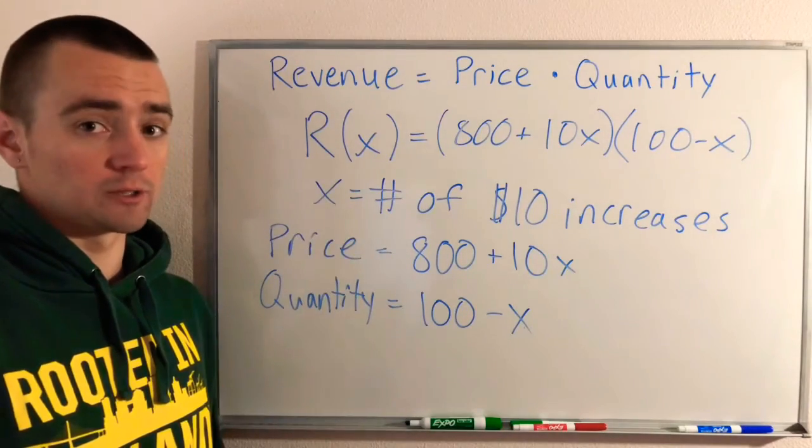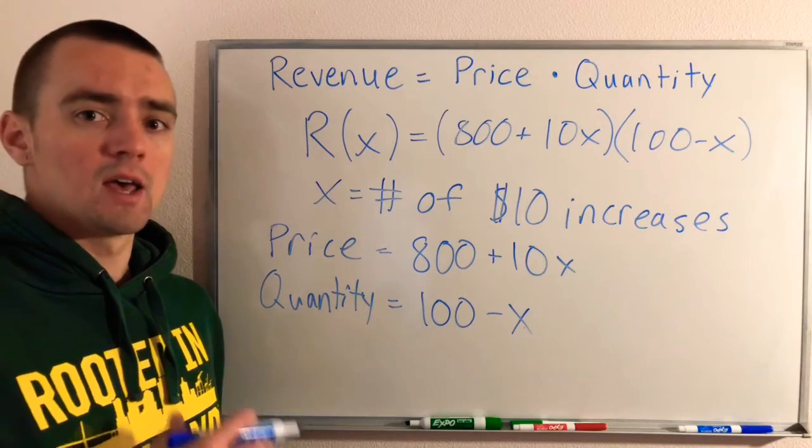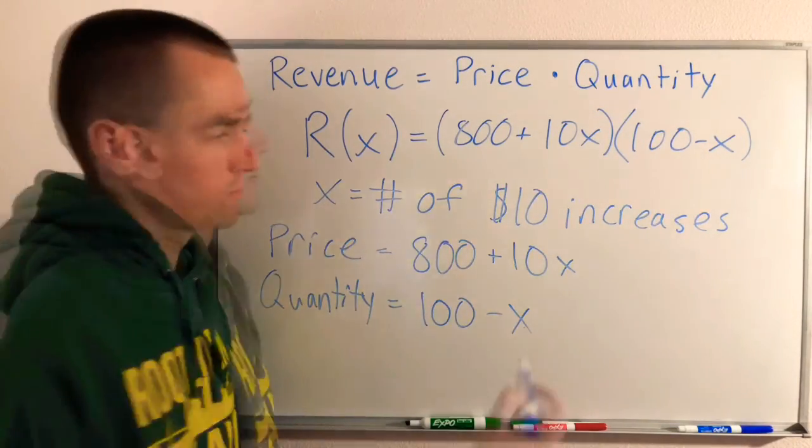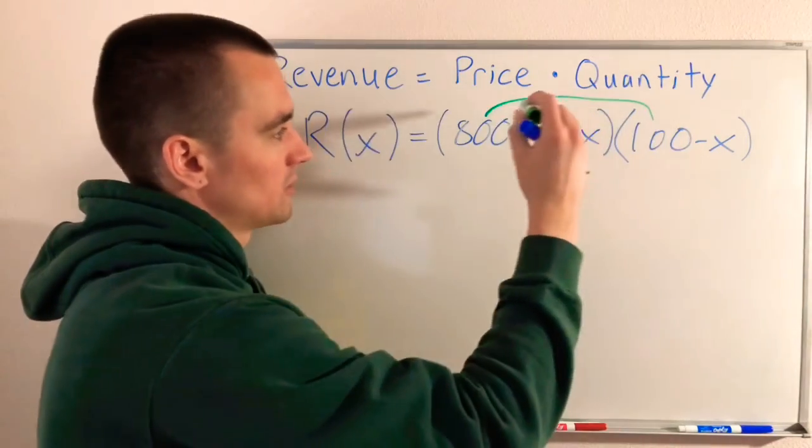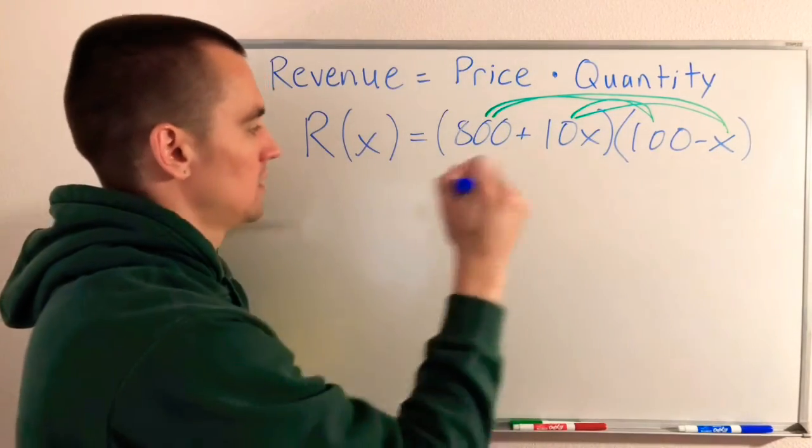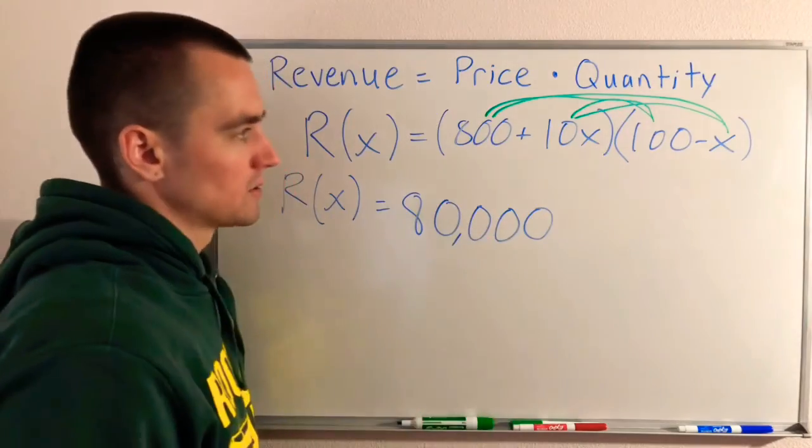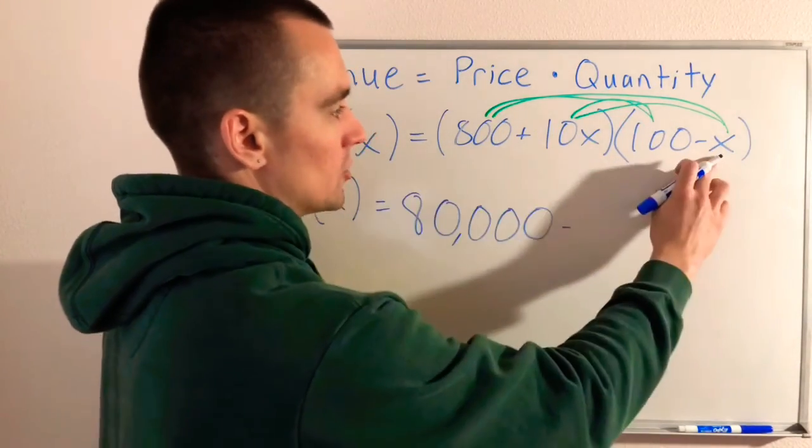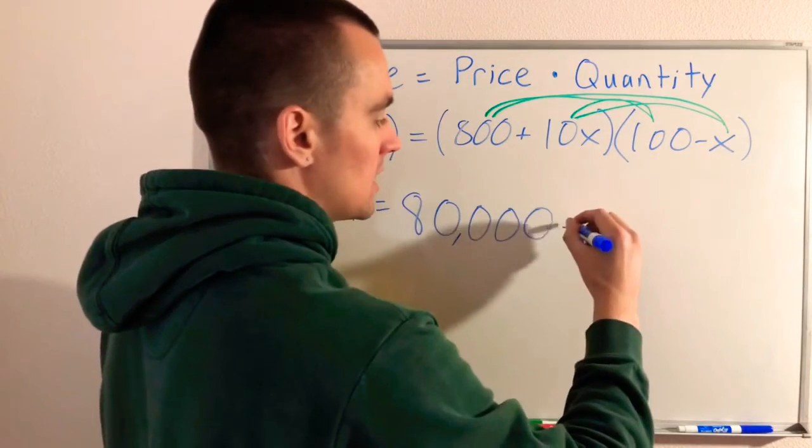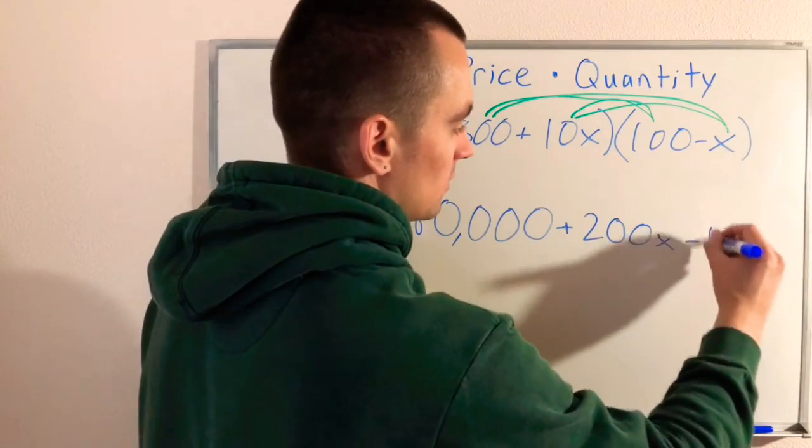Now we have our revenue equation. To maximize this equation, we're going to need to find the critical number and figure out where the maximum is. Before doing that, let's simplify this revenue equation. We're going to FOIL. Doing 800 times 100 gives us 80,000. 800 times negative X would be minus 800X. Then 10X times 100 would be plus 1,000X. So 1,000X minus 800X leaves us with plus 200X. And 10X times negative X gives us negative 10X². So R(X) = 80,000 + 200X - 10X².